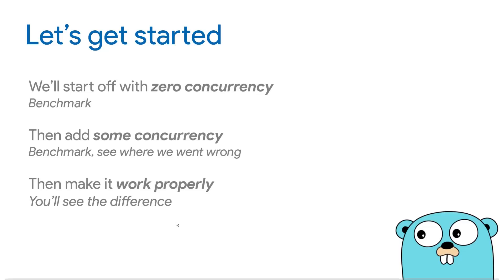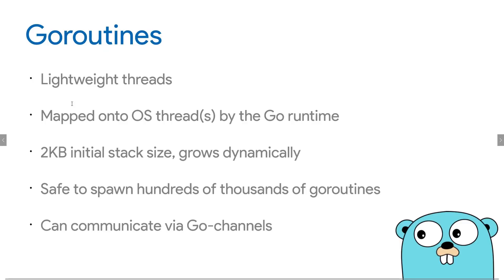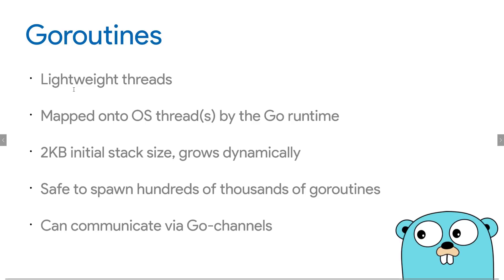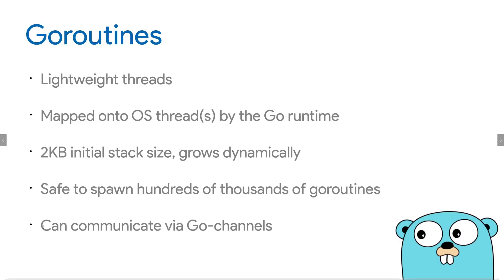Goroutines allow our application to become asynchronous. Goroutines are lightweight threads — think of them as threads that can run functions or methods in your Go program, but they are extremely lightweight. Unlike Java or C++ OS threads, these are managed by the Go runtime itself. The Go runtime allocates a few OS threads for many goroutines and maps them accordingly. Goroutines start with just a 2 kilobyte stack size and grow as needed — compared to a 2 megabyte stack for OS threads. You can spawn hundreds of thousands of goroutines even on commodity machines.